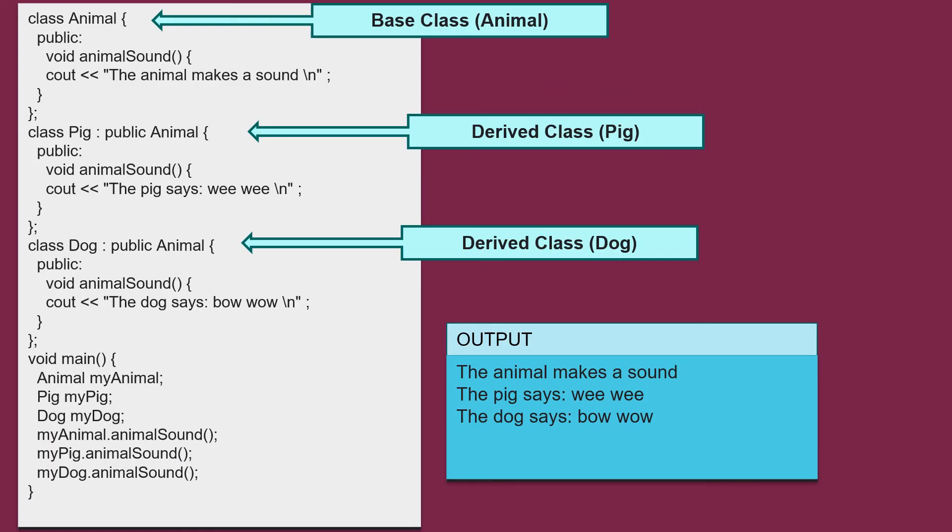In this example, we can see animal class which is the base class having the member function animal sound. Now we see there are two derived classes pig and dog which has same name of member function animal sound because sound as a characteristic of animal will be the same but their forms will be different like pig says wee wee and dog says bow wow.